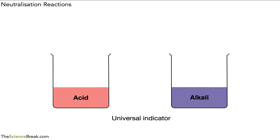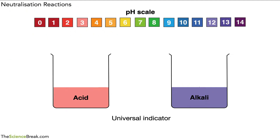We can also use the pH scale to identify whether we have acid or alkali, but that's not the focus for our video today. What we're going to do is look at what happens when we add the acid to the alkali. If we mix those two together we get a chemical reaction, and that chemical reaction will produce a substance that is not acid, not alkali — it's actually something called neutral.